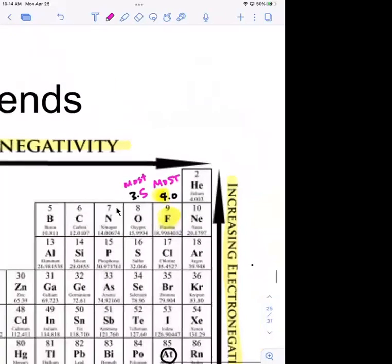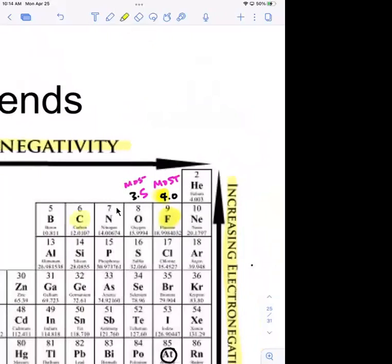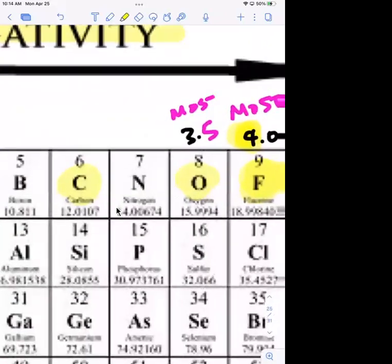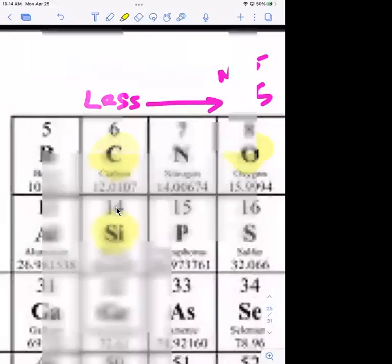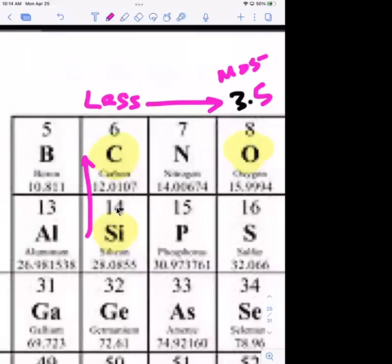Comparing carbon to oxygen — electronegativity increases from left to right, so carbon is going to be less electronegative than oxygen. If we compare carbon to silicon, which is underneath it, carbon is more electronegative than silicon because bottom to top it increases, and left to right it increases.